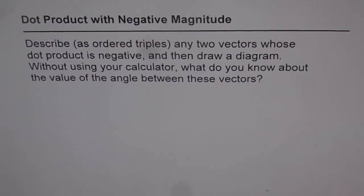Let's explore dot product with negative magnitude. Describe as ordered triples any two vectors whose dot product is negative, and then draw a diagram. Without using your calculator, what do you know about the value of the angle between these vectors?